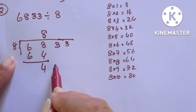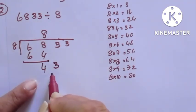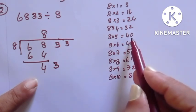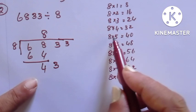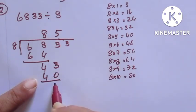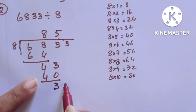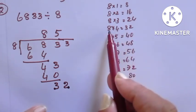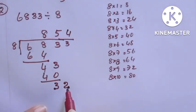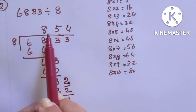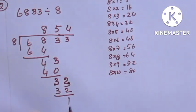Next step: bring down the next digit, which is 3. Now the number is 43. 48 is greater, so we take 40. We write 5 in the quotient, since 8 fives are 40. Subtracting gives 3. Bring down the next digit, which is also 3, giving us 32. 32 is exactly divisible by 8: 8 fours are 32. We write 4 on top, write 32 below, and subtract to get 1. The quotient is 854 and the remainder is 1.